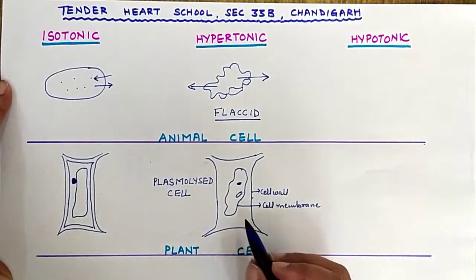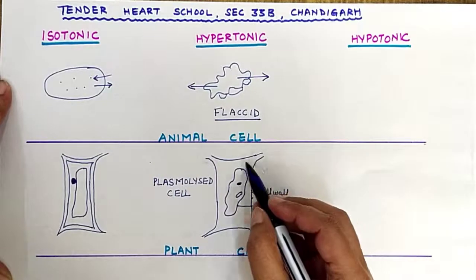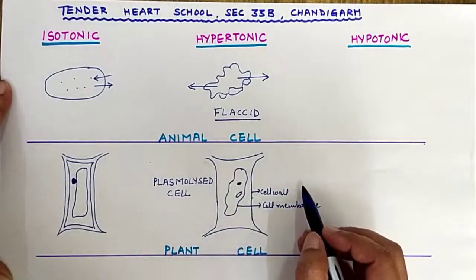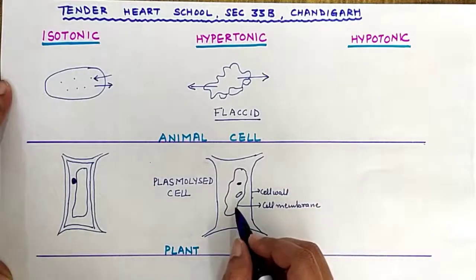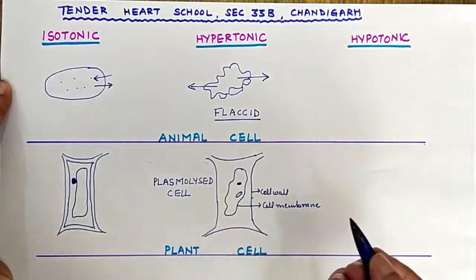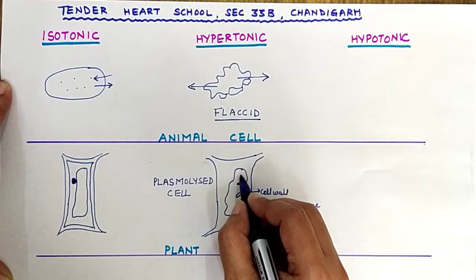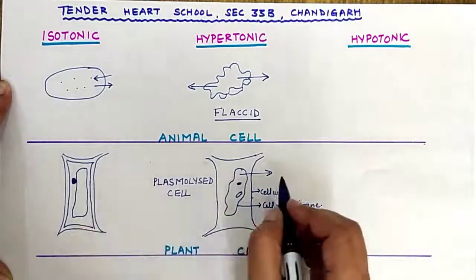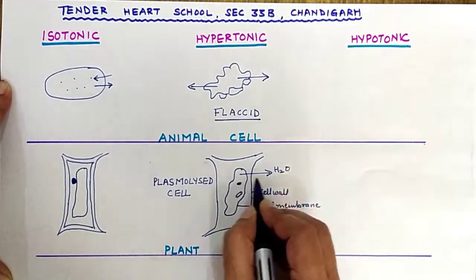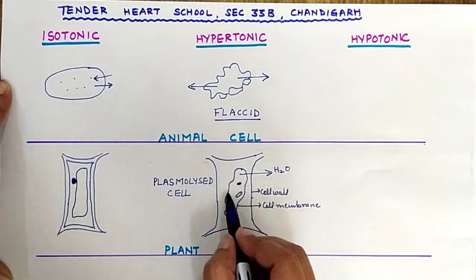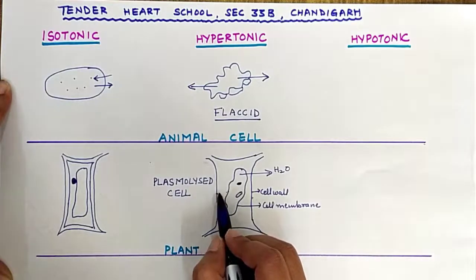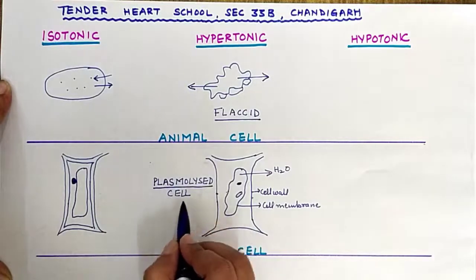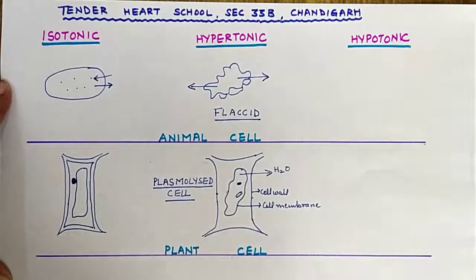This is because of exosmosis. When a plant cell is kept in a hypertonic solution — a solution which has higher concentration than the concentration present inside the cell — the water will move out from inside the cytoplasm and from the vacuole. This leads to separation of the cell membrane from the cell wall, and this state of the cell is called the plasmolyzed state or plasmolyzed cell.